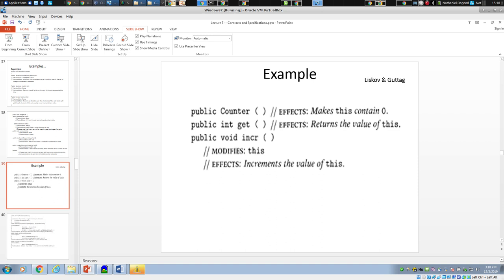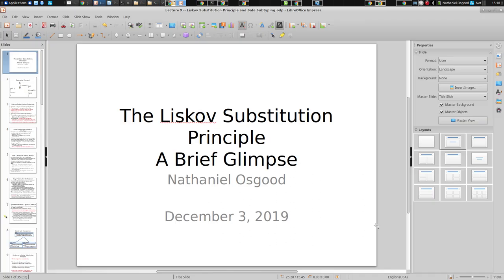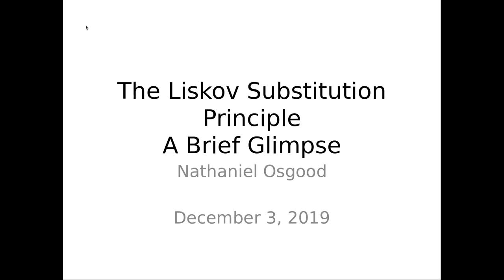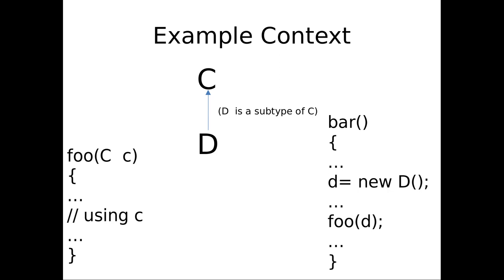I want to switch over to the Liskov substitution principle, because this is all about how specifications play a role in reasoning about subtypes, safe subtyping, or behavioral subtyping. The idea here is we have a subtype — one thing is a subtype of another. This could be a subclass, but it's more general than that. It also has to do with cases where this is an interface and D implements that interface — even though it's not a subclass of it, it's a subtype of it.